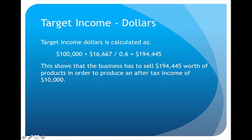To express the same target income answer in dollars: $100,000 in fixed costs plus $16,667 (which is $10,000 divided by 60%), divided by the contribution margin ratio of 0.6, gives approximately $194,445. That means the company would need to sell $194,445 worth of product to produce $10,000 of after-tax income.